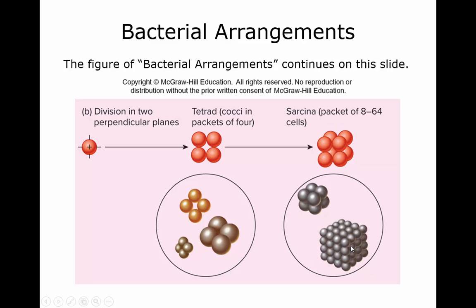They can be divided along two perpendicular planes. These are tetrads where they're in packets of four, and these are sarcina where they look like cubes. They're arranged in cubes anywhere from 8 to 64 cells.